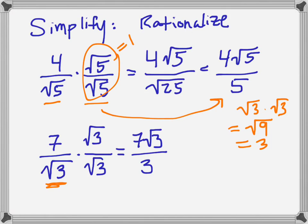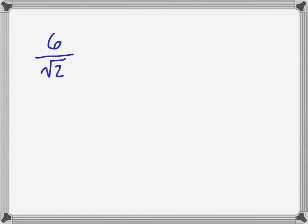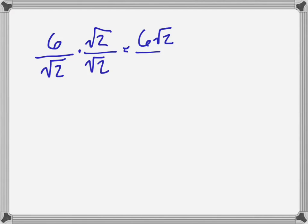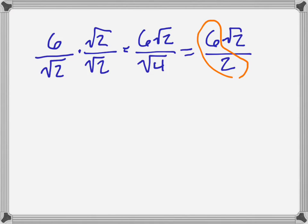Let's do one more example: 6 divided by the square root of 2. I'll multiply by square root of 2 over square root of 2. In the numerator I get 6 square root of 2. In the denominator I have the square root of 4, which equals 2. Notice that the numbers outside the square root can be reduced: 6 divided by 2. If there's any reducing we can do with the fractions, go ahead — that gives me a 3. The final answer is 3 square root of 2.